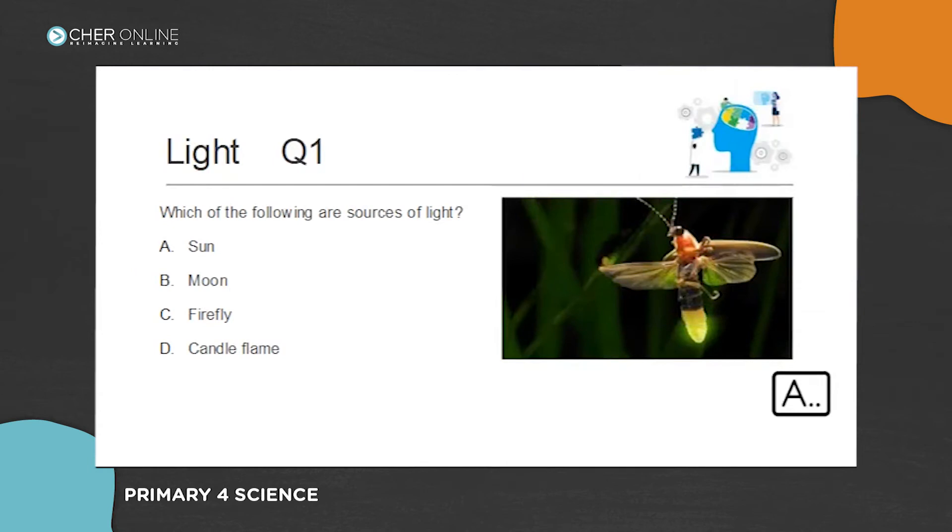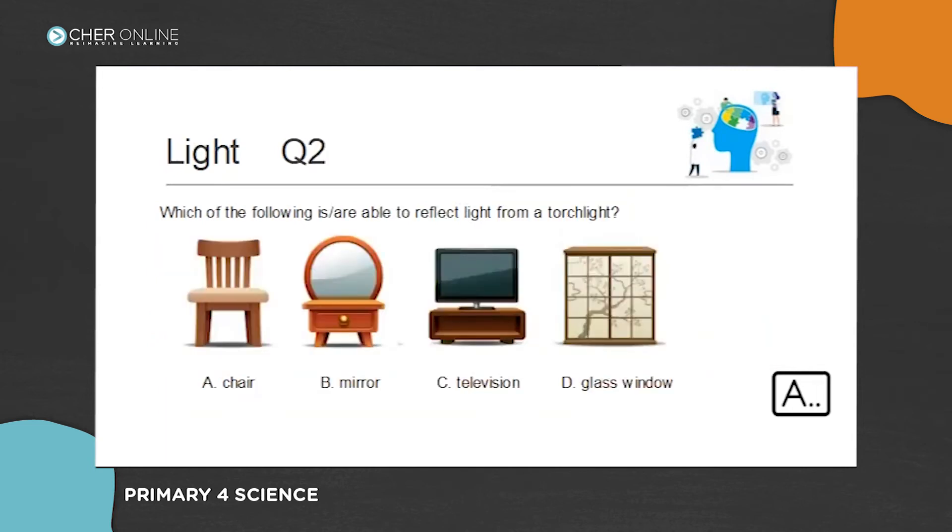Okay, let's see. You can choose your answer now. C and D... like we said, the moon does not give off its own light. Okay, next. Now, whenever there's light, right?